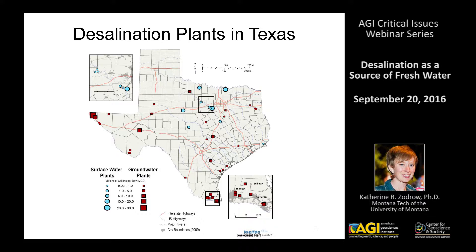Here's a map of all the desalination plants in Texas: blue dots are plants that treat surface water, and red squares are plants that treat groundwater. We have plants all over the state, but the vast majority of desal plants in Texas are pretty small — as shown in the legend by size in millions of gallons per day. Although we have some plants near the coast, the biggest of which is near Brownsville at the southern tip, a lot of our plants are inland, which creates additional challenges for brine disposal.